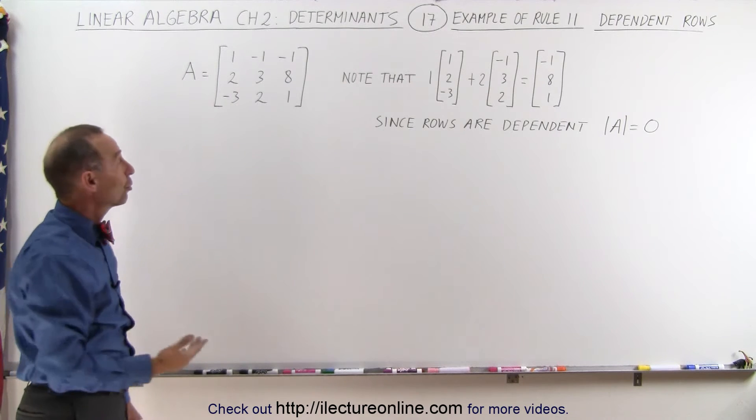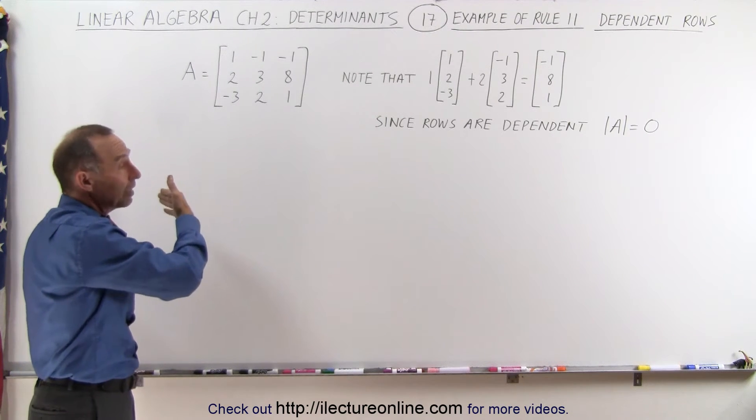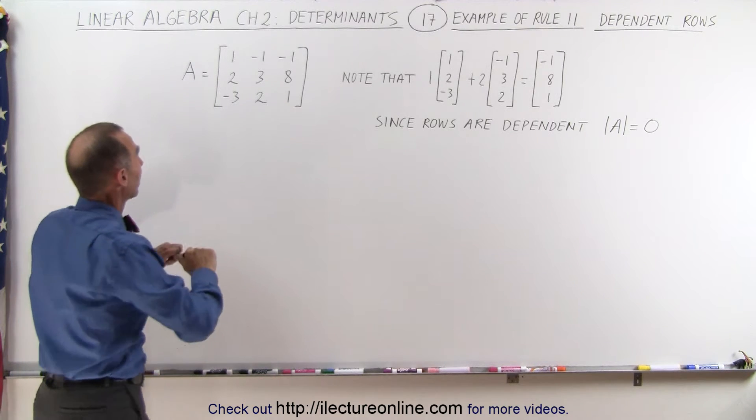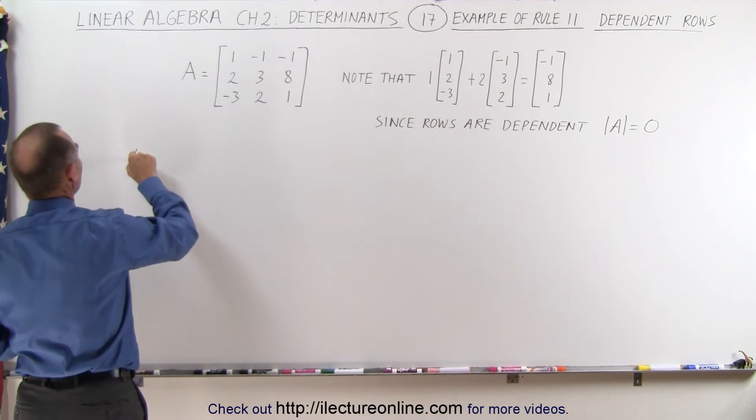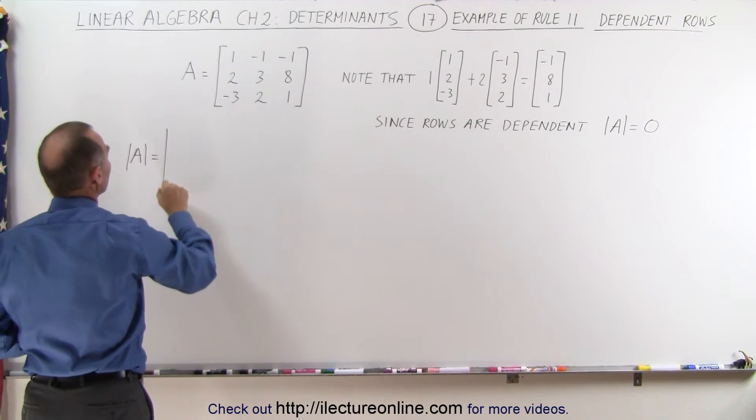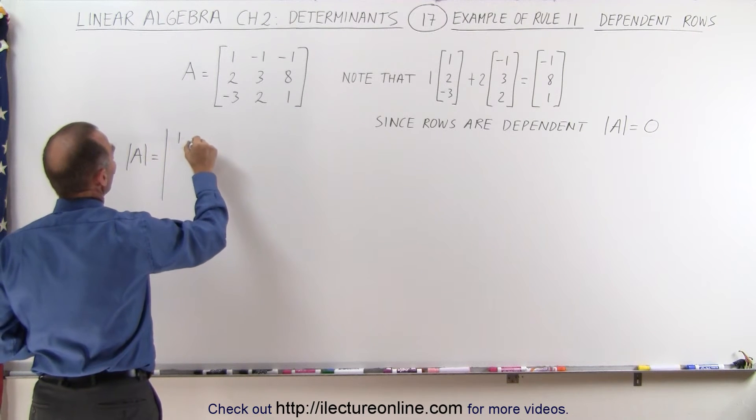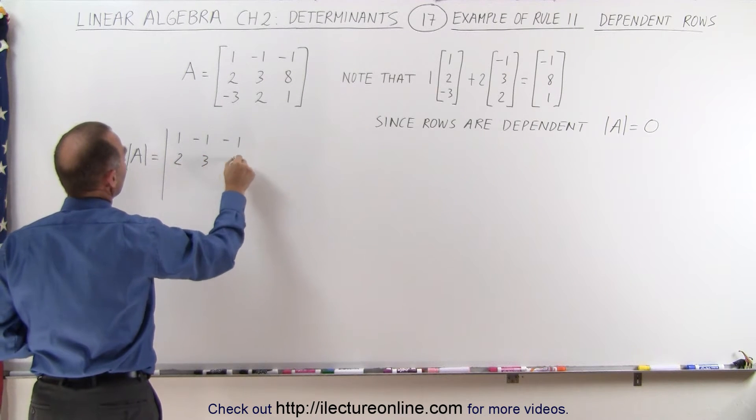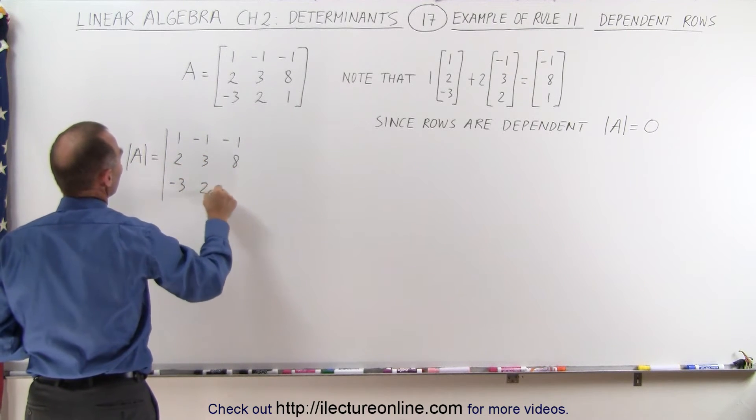Now let's go here and find the determinant of this matrix and see if that is indeed 0 since we know that the rows are dependent. The determinant of A is equal to the following determinant here: 1, negative 1, negative 1, 2, 3, 8, negative 3, 2, and 1.